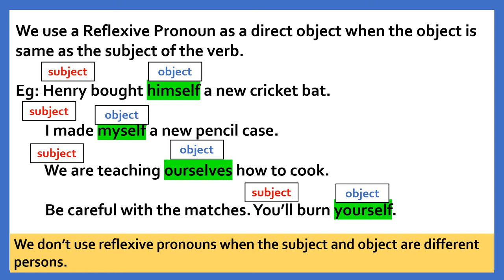Second sentence: I made myself a new pencil case. Here the subject is I and the object is myself. The pronoun myself reflects back to the subject — it is the same as the subject — hence the word myself is a reflexive pronoun. Third sentence: We are teaching ourselves how to cook. Here the subject is we and the object is ourselves. The pronoun ourselves is the same as the subject we, so it is a reflexive pronoun.